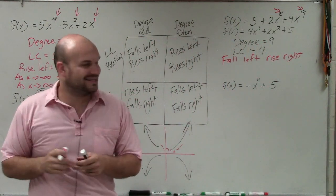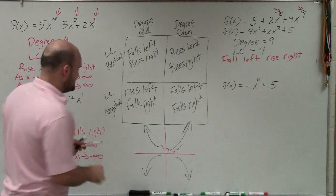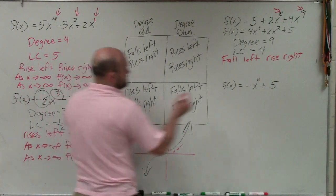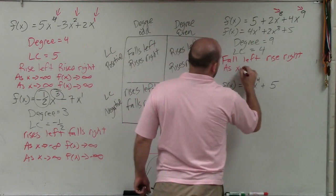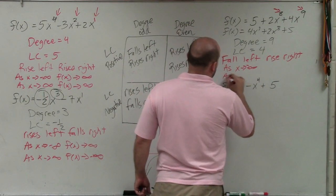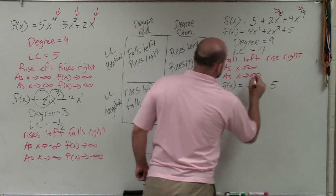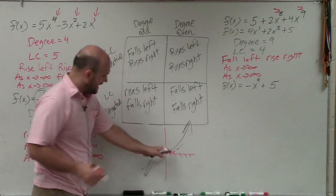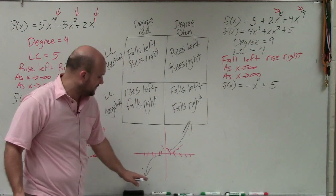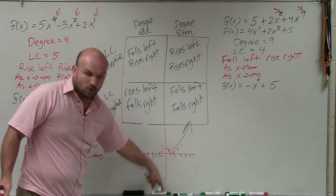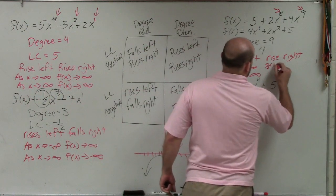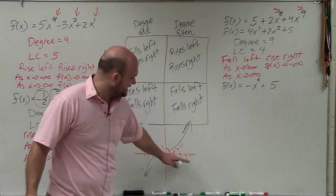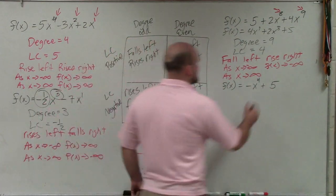Let's look at the interval notation for this one. As x approaches negative infinity, f of x goes towards negative infinity. And as x goes towards positive infinity, f of x also goes to positive infinity.